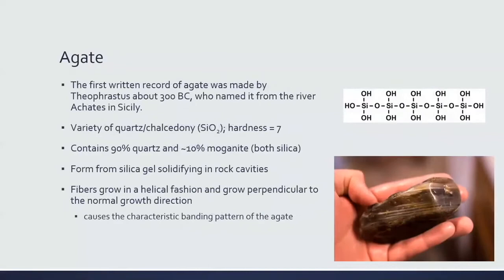The first written record of agate was made by Theophrastus in about 300 BC, named for the river Achates in Sicily. Agate is a variety of quartz/chalcedony with a hardness of about seven, composed of silica molecules. Agate can contain about 90% quartz and 10% moganite — both varieties of silica — and these variations help give it different colorations and banding. Agates form from the solidifying of silica gel in rock cavities, with fibers growing in a helical fashion perpendicular to the normal growth direction, creating the characteristic banding.